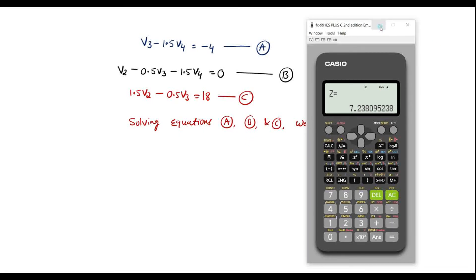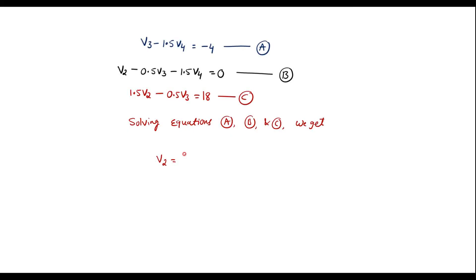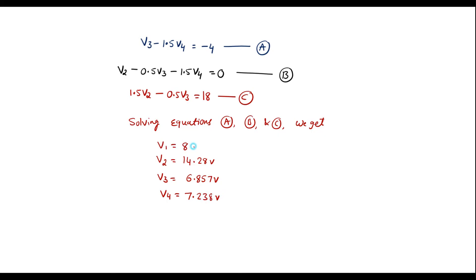So the node voltages are: V1 = 8 volts, V2 = 14.28 volts, V3 = 6.857 volts, and V4 = 7.238 volts. These are all the node voltages for the given circuit. Thank you for watching.